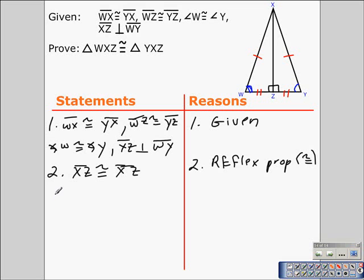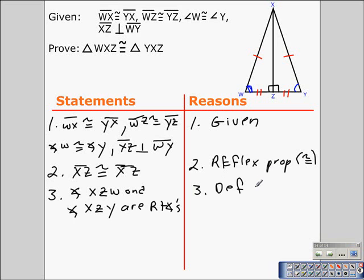The next part of this proof is going to be establishing that angle XZW and angle XZY are right angles. And that's from the definition of right angles, where right angles are formed by two perpendicular lines or line segments.